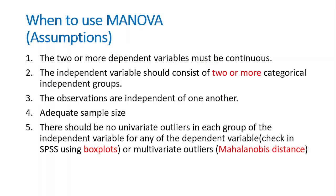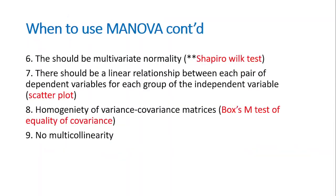There are a number of assumptions that have to be met for MANOVA. The first is that the two or more dependent variables must be continuous. The independent variable should consist of two or more categorical independent groups. The observations must be independent of one another. There should be an adequate sample size, and there should be no univariate outliers in each group of the independent variable for any of the dependent variables. There should also be no multivariate outliers.